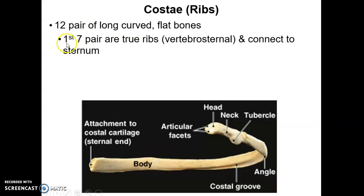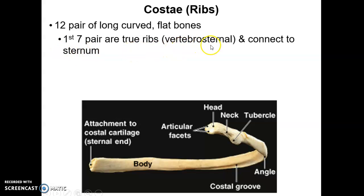Pairs 1 through 7 are true ribs. They're referred to as vertebrosternal, and they connect to the sternum via their cartilage. Hence vertebrosternal, because these ribs articulate with both the vertebral column and the sternum directly.